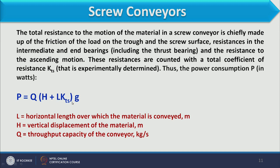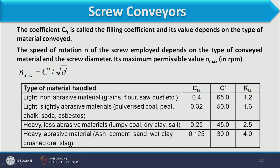Using this equation we can calculate the power consumption in a screw conveyor. The value of K_TS depends on different materials — K_TS increases when going from lighter to heavier material, because heavier material is more difficult to transport and puts more resistance to flow. Therefore power consumption to convey heavy material is increased. We have discussed empirical correlations to calculate capacity, maximum RPM, and power consumption in screw conveyors.